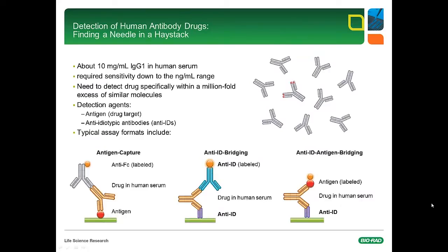Further, anti-idiotypic antibodies provide an important solution to a problem central to antibody drug development. When a human or humanized antibody drug is given to a patient, the drug disappears within the high concentration of serum antibodies that are all very similar molecules. Typically, the drug concentration is a million-fold lower than the serum antibody concentration, making it difficult to quantify the drug. In order to measure drug levels, highly specific and highly sensitive reagents are needed that specifically bind to the drug but not to the vast excess of similar immunoglobulin molecules.